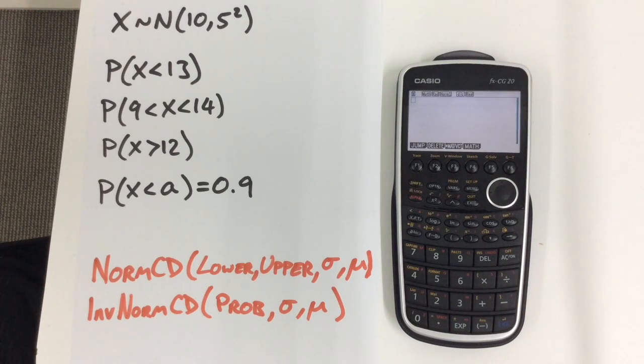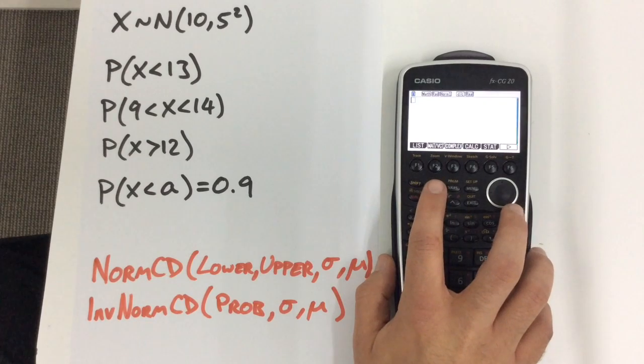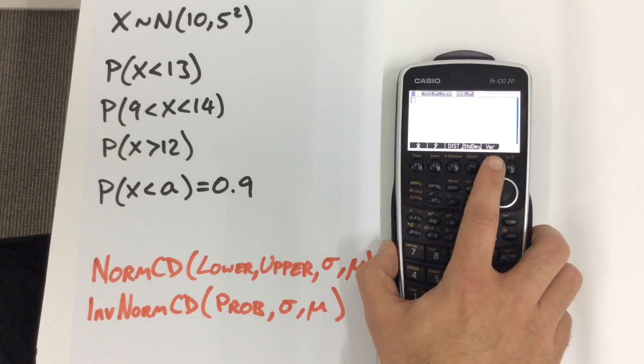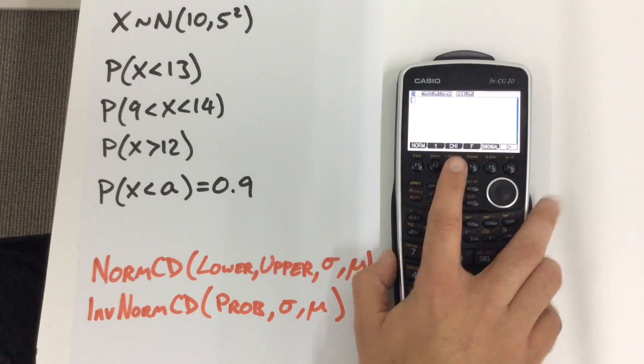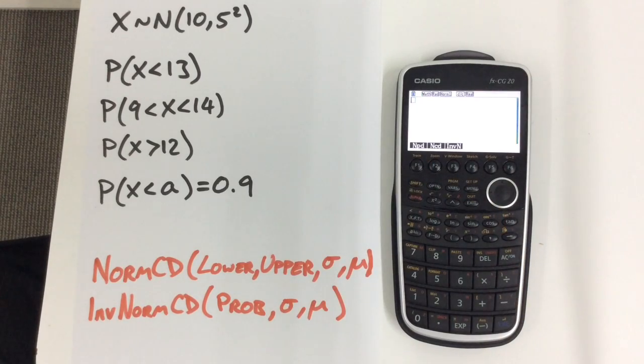So we'll start on our first one: the probability of X being less than 13. What we're going to do on the calculator is press Options, go into Statistics, then Distribution, and of course it's the Normal that we want.